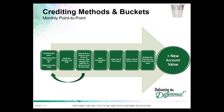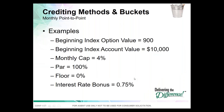The monthly point-to-point uses a monthly measuring period. We look at the change in the underlying index each month, apply a monthly cap rate, and repeat 12 times. After all 12 months are done, we look at the participation rate, apply the floor rate, and add any bonus if applicable.